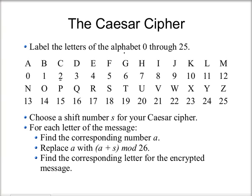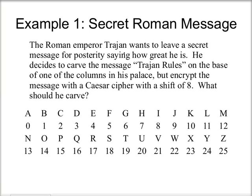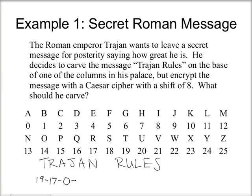Let's look at an example. The Roman Emperor Trajan wants to leave a secret message saying how great he is. He decides to carve 'Trajan rules' on the base of a column in his palace, encrypted with a Caesar Cipher with a shift of 8. The first step is to find the numbers corresponding to the letters: T is 19, R is 17, A is 0, J is 9, A is 0, N is 13 — that's the first word. Then R is 17 again.